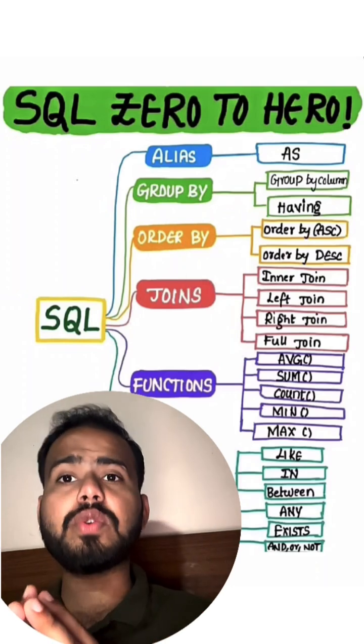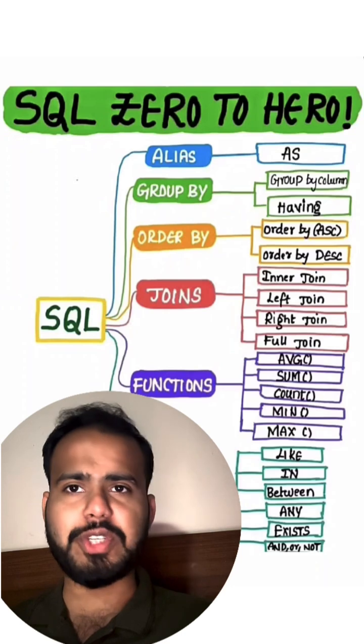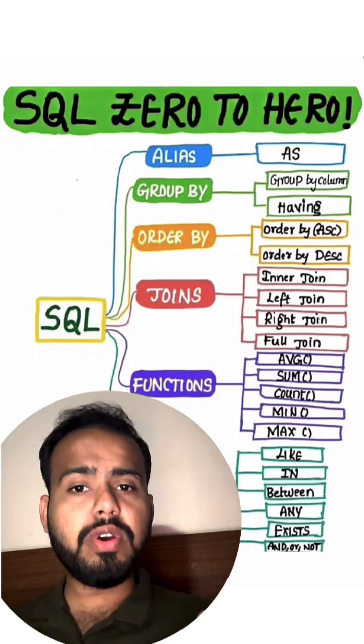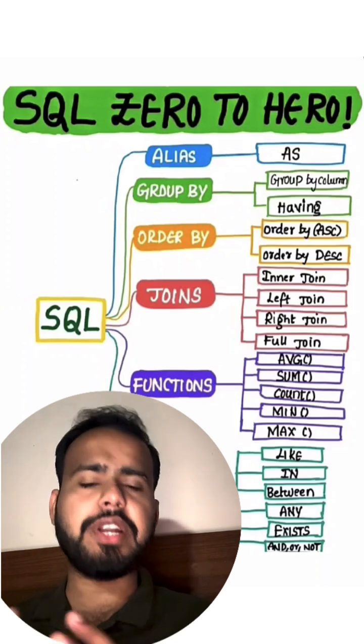Then we have GROUP BY. I've already explained in many shorts and videos. So GROUP BY column and HAVING is just about filtering or grouping the data, which kind of data you want.